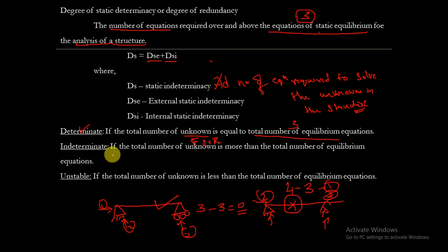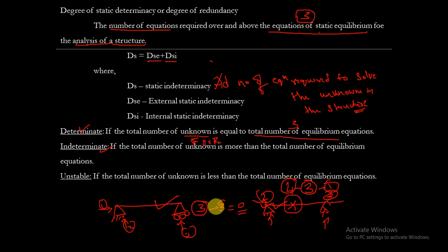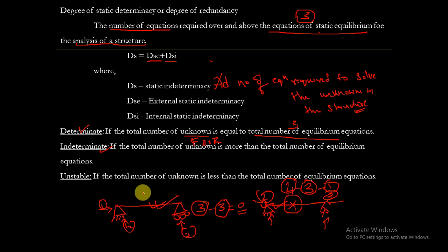If the total number of unknowns is more than the equilibrium conditions, the structure is indeterminate. If the total number of unknowns equals the equilibrium equations, the structure is determinate. If the total number of unknowns is less than the equilibrium equations — say unknowns equal 2 and equations equal 3 giving minus 1 — the structure is unstable.